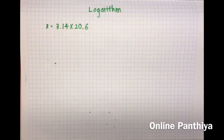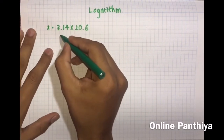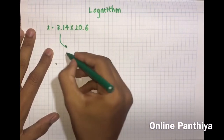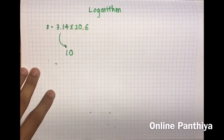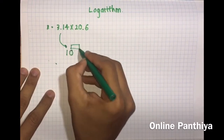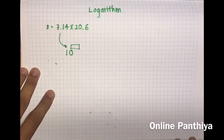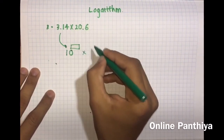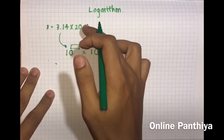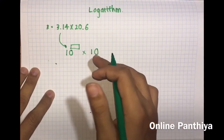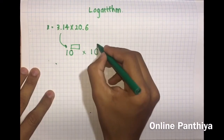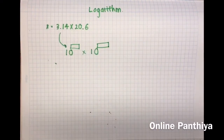Before I teach you what logarithm is, I'll give you a short introduction of what we are doing with it. Using logarithm, we are going to write 3.14 as 10 to the power of some number — when you find that power, you should get 3.14. You find that number using the logarithmic table. Similarly, 20.6 is written as 10 to the power of something, where 10 to that power gives you 20.6.